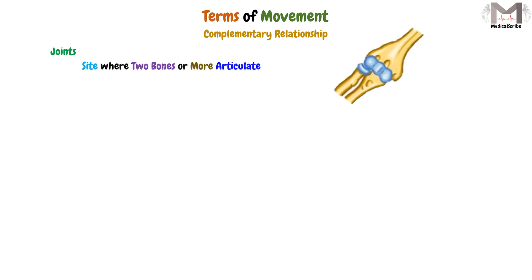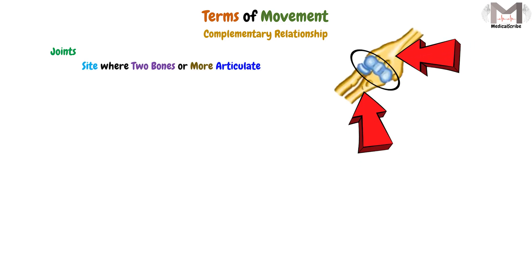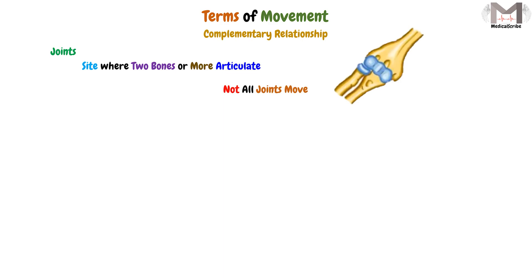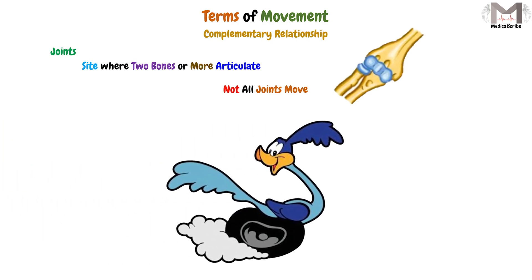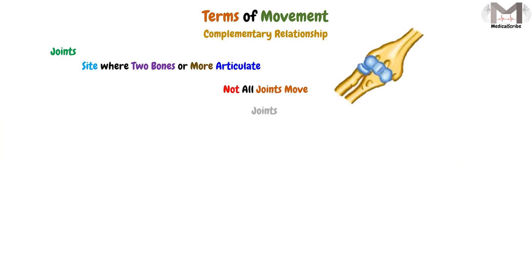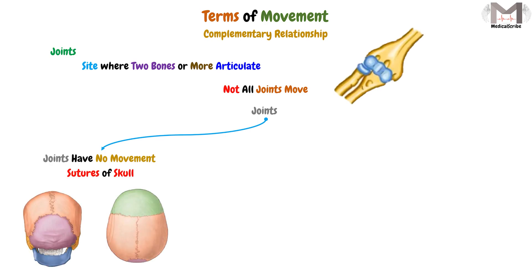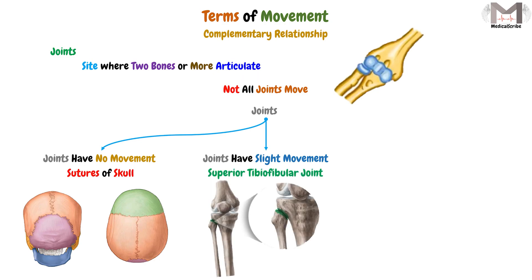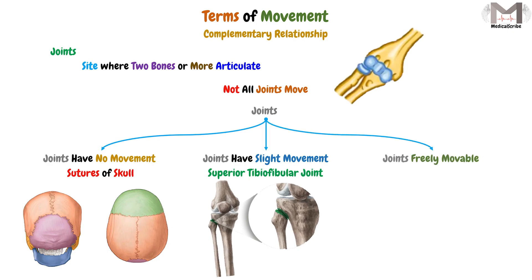A joint is the site where two or more bones articulate. But not all joints move, because they are subdivided into types. The joints are divided by mobility into three types: joints that have no movement, like the sutures of the skull; joints that have slight movement, like the superior tibio-fibular joint, which is the joint found in the superior aspect between the tibia and fibula of the leg; and joints that are freely movable, like the shoulder joint.